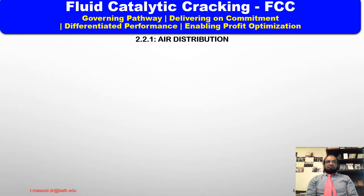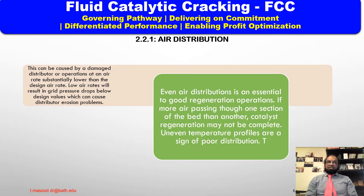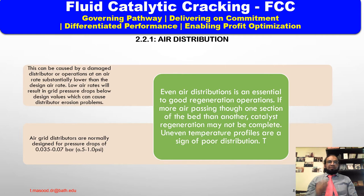Air distribution is the first instance of the regenerator. Even air distribution is essential to good regenerator operation. If more air is passing through one section of the bed than another, catalyst regeneration may not be complete. Uneven temperature profiles are a sign of poor distribution, which can be caused by a damaged distributor or operation at an air rate substantially lower than the design rate. Low air rates will result in a grid pressure drop below design value, which can cause distributor erosion problems. Air grid distributors are normally designed for pressure drops from 0.035 to 0.07 bar, or 0.5 to 1.0 psi.